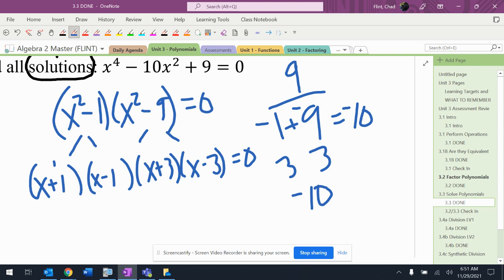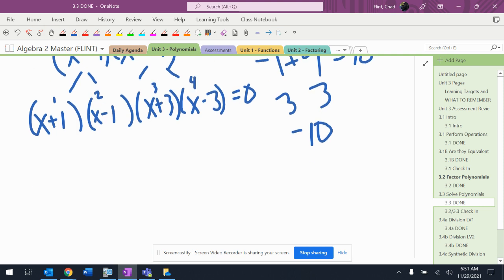Now I have four sets of parentheses - one, two, three, four - which means I'm going to get four answers, which is what I wanted. All right, and maybe with this you can just use your shortcut, but I'll do this: x plus one equals zero, x minus one equals zero, x plus three equals zero, and x minus three equals zero.